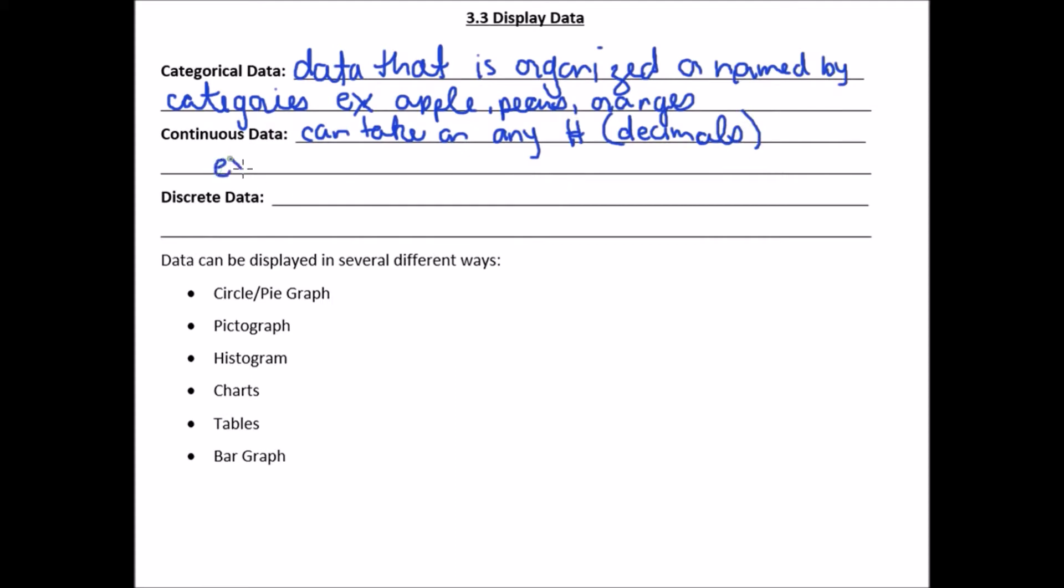So, example, time, height, weight, lots of measurements. And the reason is because tonight you're not going to go to sleep and you're five foot two and tomorrow you're going to wake up and you're going to be five foot four. It doesn't jump like that. It's very gradual and it hits every single decimal in between.